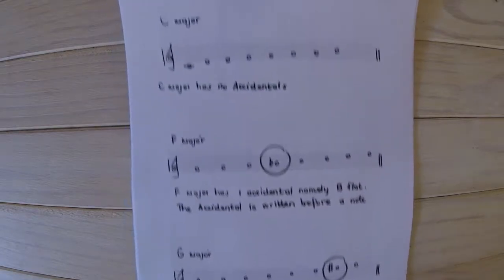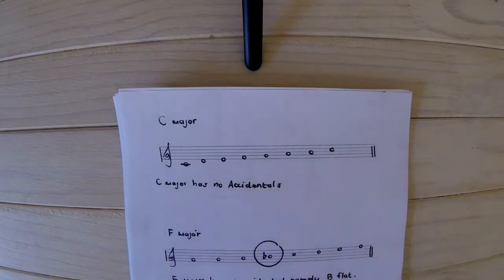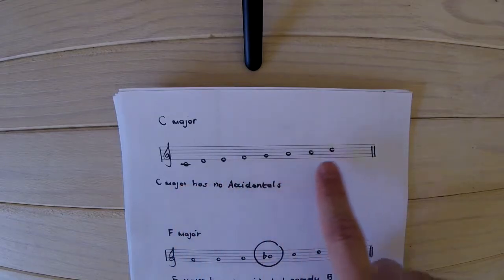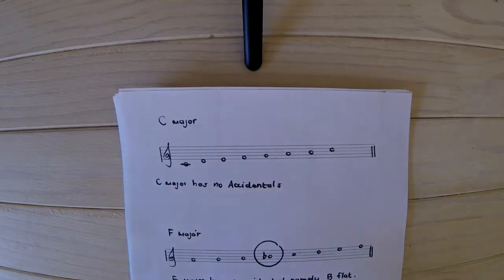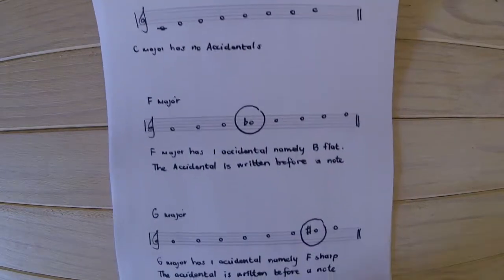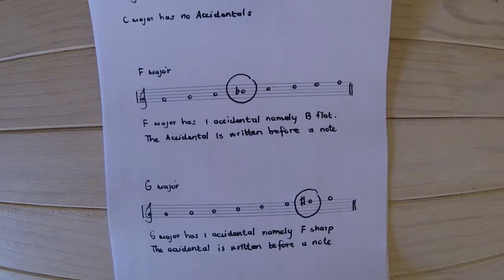Okay, so just quickly to recap. C major has no accidentals, so it is just a scale like that. F major has one accidental, namely B flat. And always remember with accidentals, the accidental is written before a note. And don't make the accidental, please don't write the accidental on the bottom line when the note is in fact on the third line. We need to write the accidental right next to it like so. And for G major, we have one accidental as well, namely F sharp. And the accidental again is written before the note.